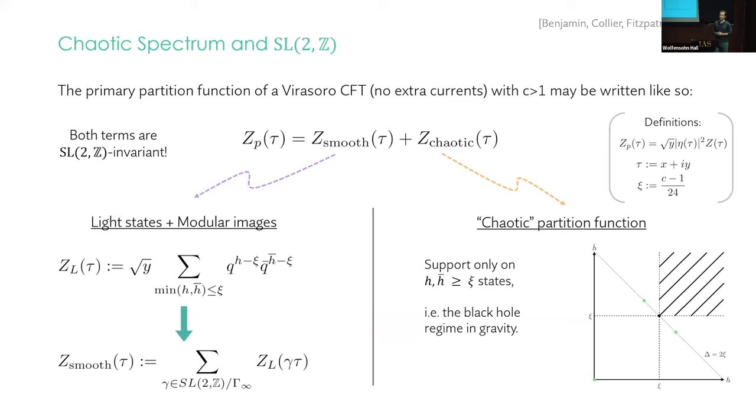What's left is what I want you to think of as the chaotic part of the partition function. It's the piece that's not fixed by the low energy data, that is the light data, plus the states that need to be there because of modular invariance. It has support only on states above this threshold, C minus 1 over 24. We're talking about H or H bar individually. This is, of course, familiar as the semi-classical black hole regime in gravity. But again, here we're working at finite C. So as a formal statement, you can split the partition function this way.